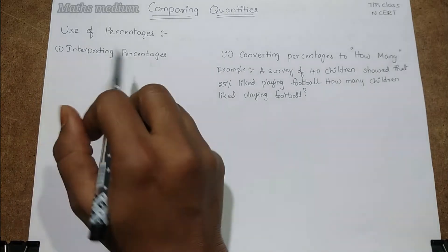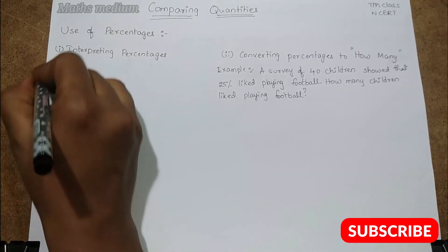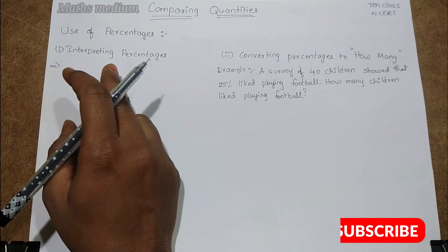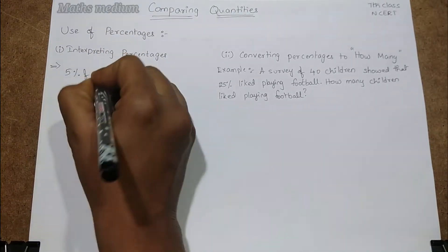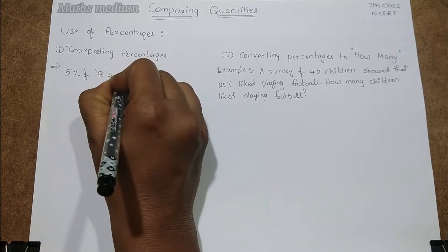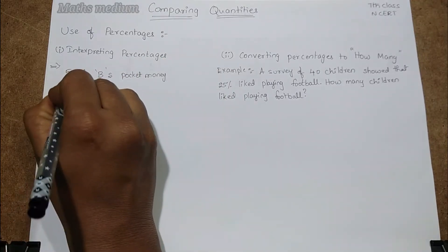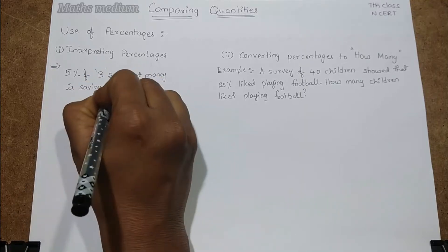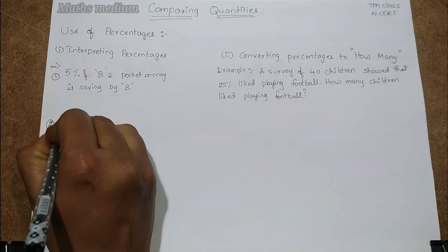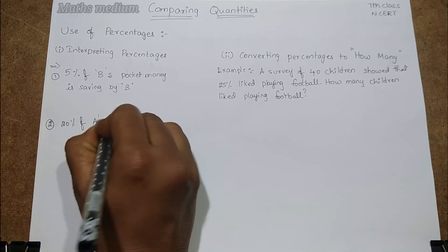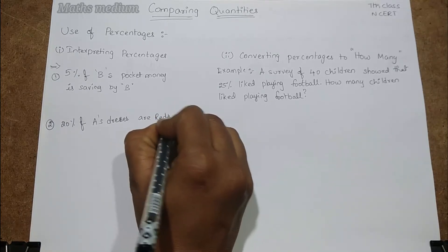Take the first one here: interpreting percentages. It means how we are going to represent and how we are denoting the percentages. I will give you 2-3 examples, then you will get better understanding about how to interpret the percentages. If you take 5% of B's pocket money is saving by B. Second one is 20% of A's dresses are red in color.